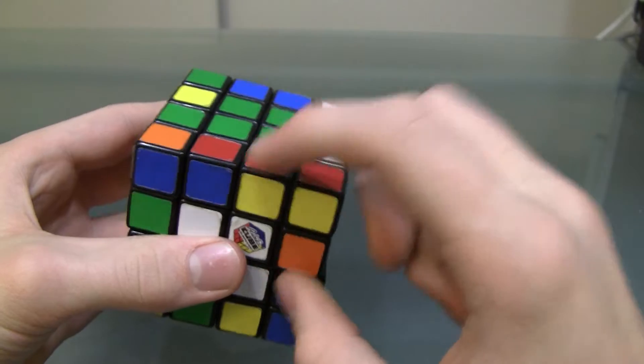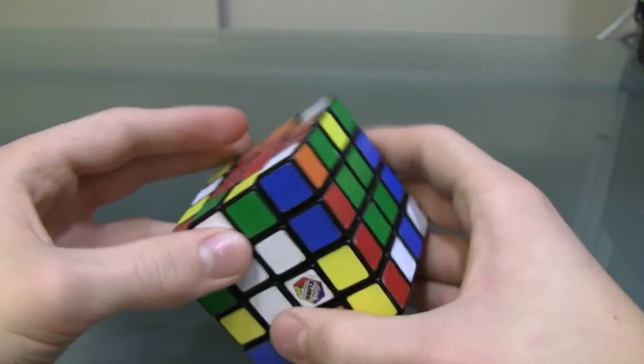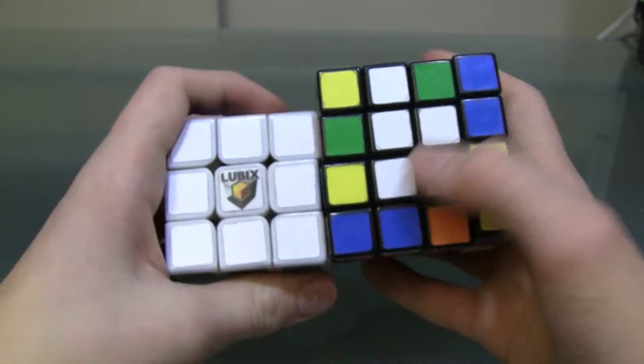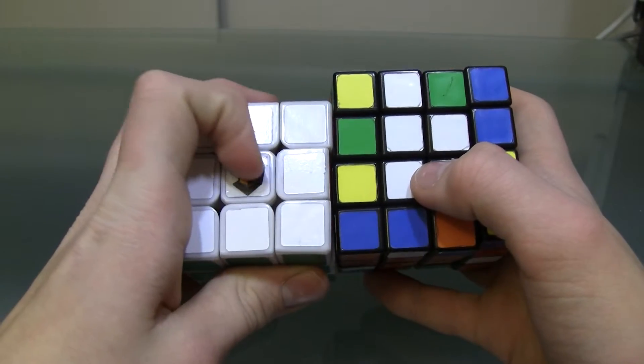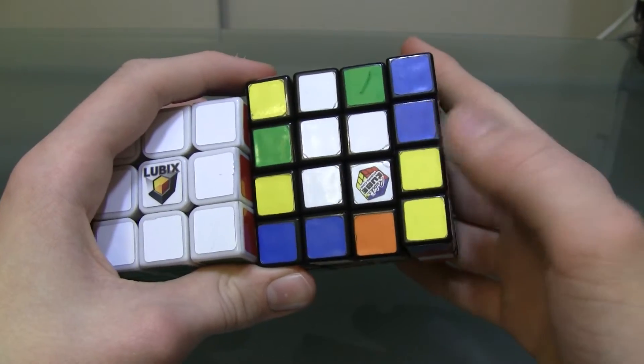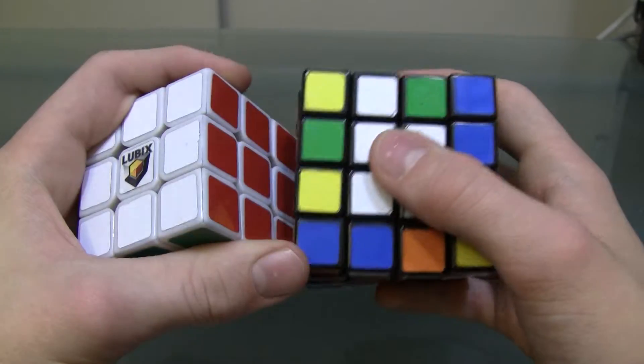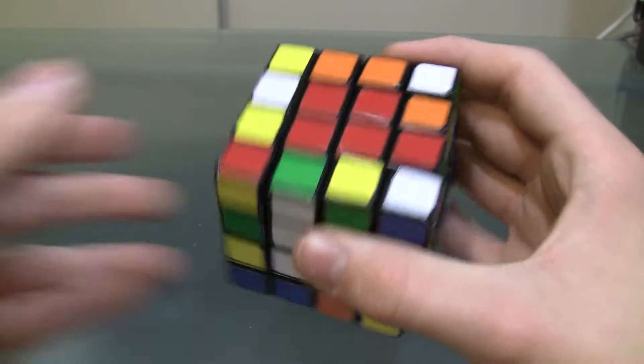Because after we pair up all these edge pieces, it's basically a giant 3x3, with these four center pieces serving as one center piece, and these two paired-up edge pieces serving as one edge piece. And then we can continue to solve it as a 3x3.